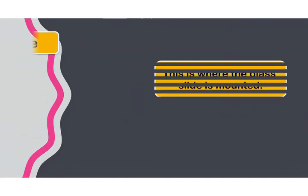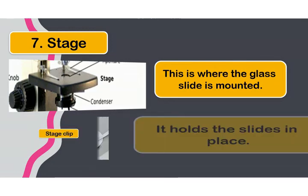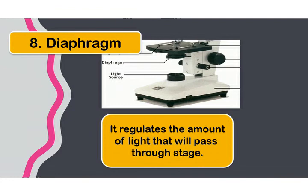Next we have the stage. The stage is where the glass slide is mounted or placed. Then we have the stage clip. The stage clip holds the glass slide in place.